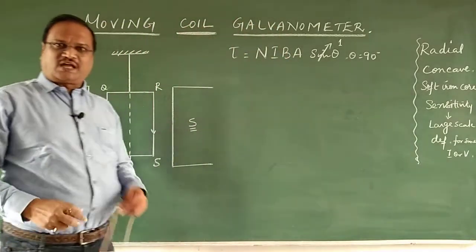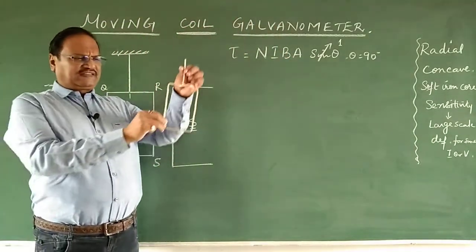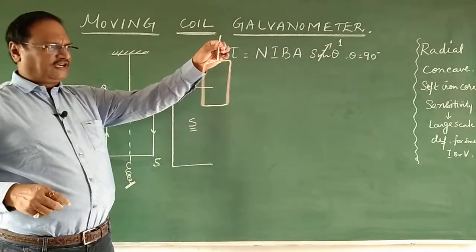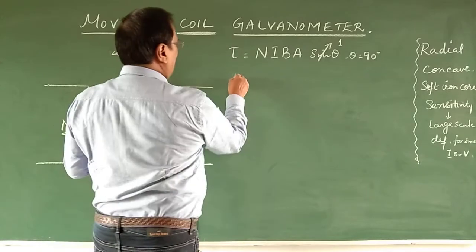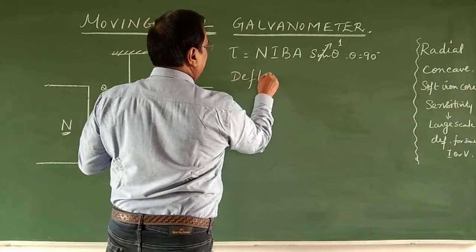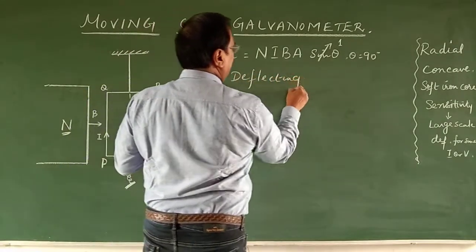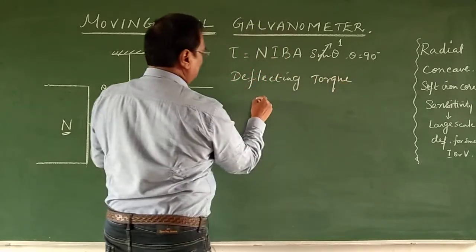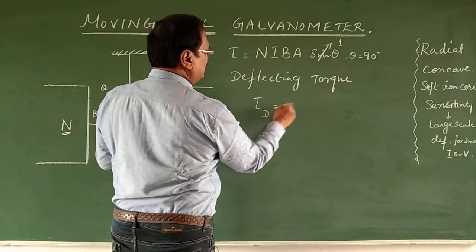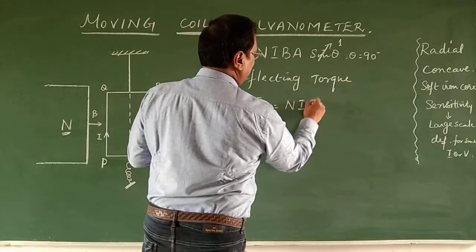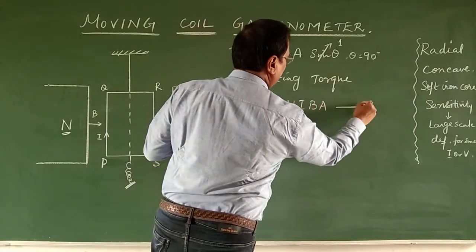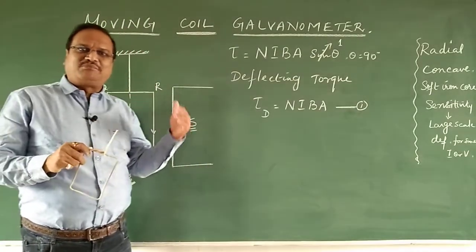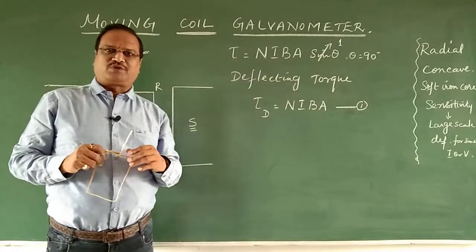This torque is setting up a deflecting torque. The deflecting torque τ_d is equal to nIBA — that is equation number one. Now, how can we make this into a meter — a galvanometer?